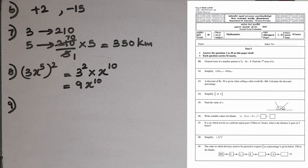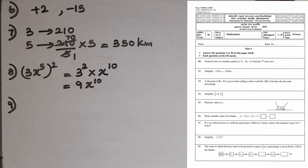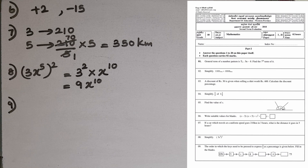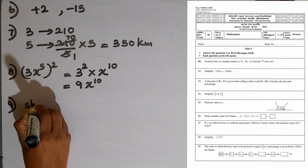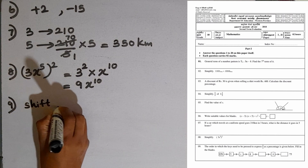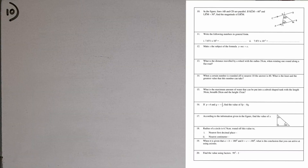Question 9: the order in which keys need to be pressed to express 3 over 4 as a percentage is given. Fill in the blanks. You press 1, then 3, then division, then 4, then the shift key, then the equal sign, then again the equal sign. The first blank is the shift key.